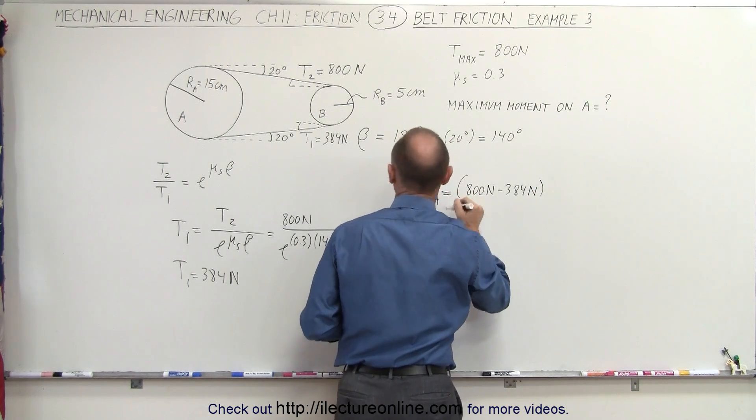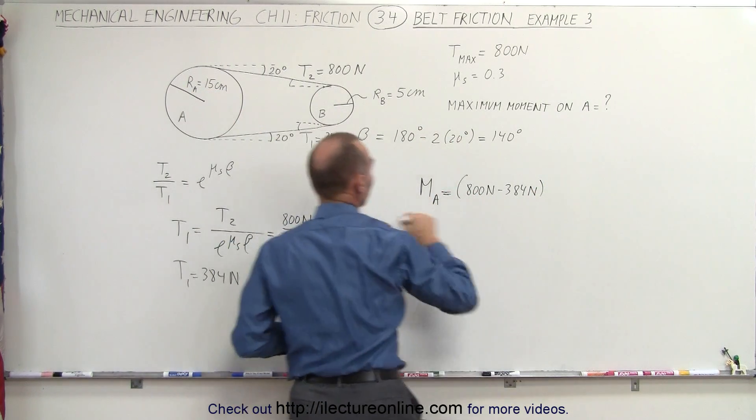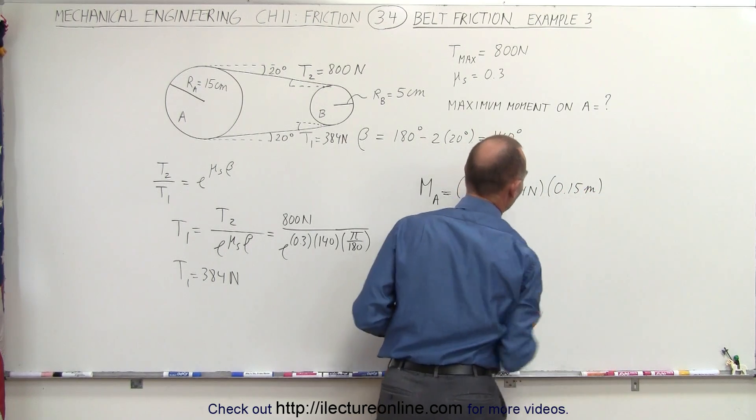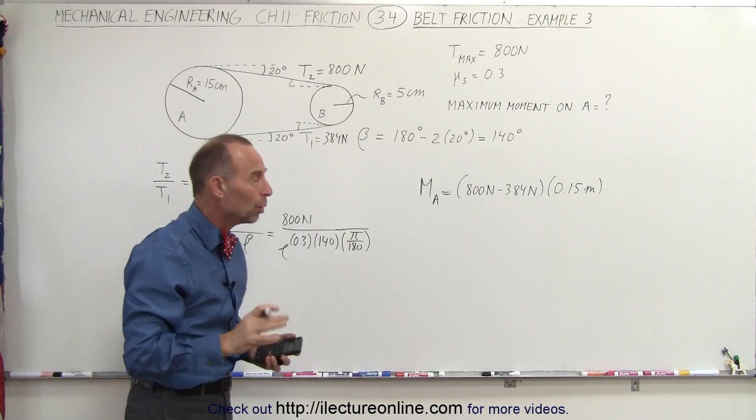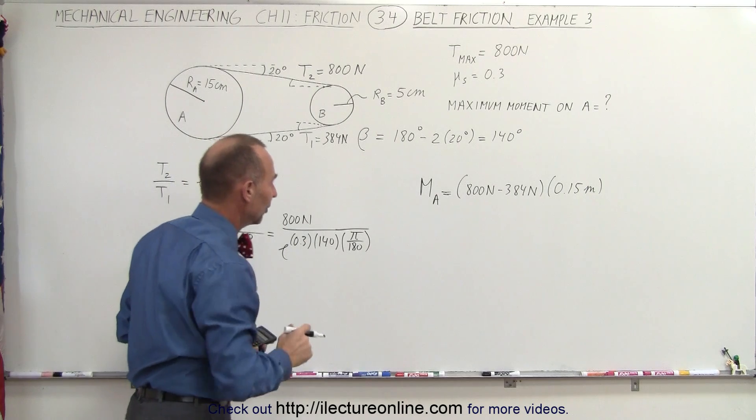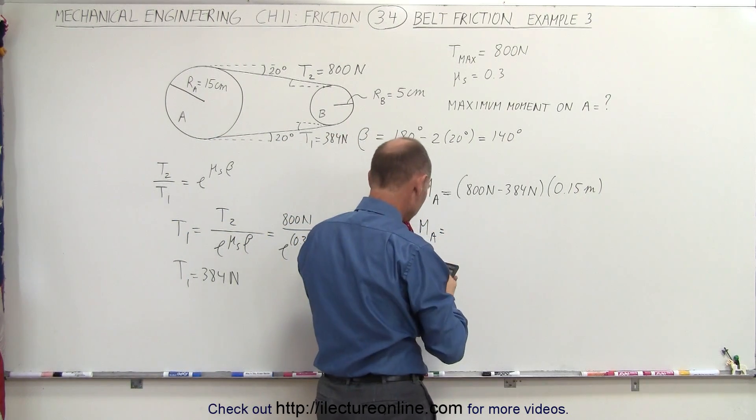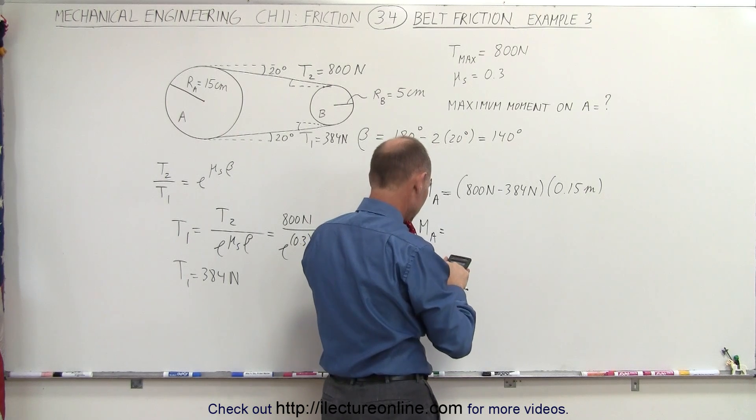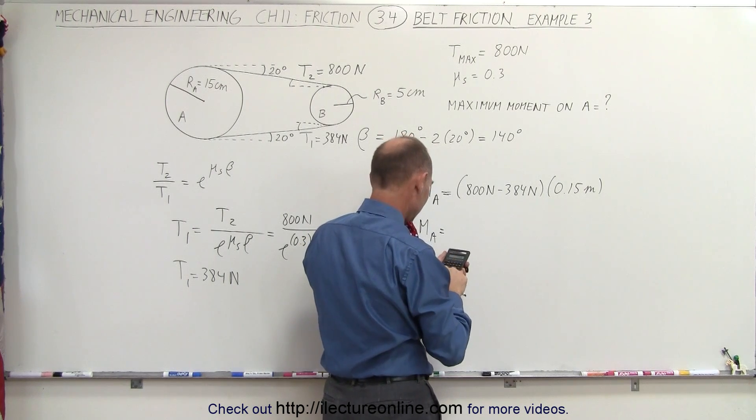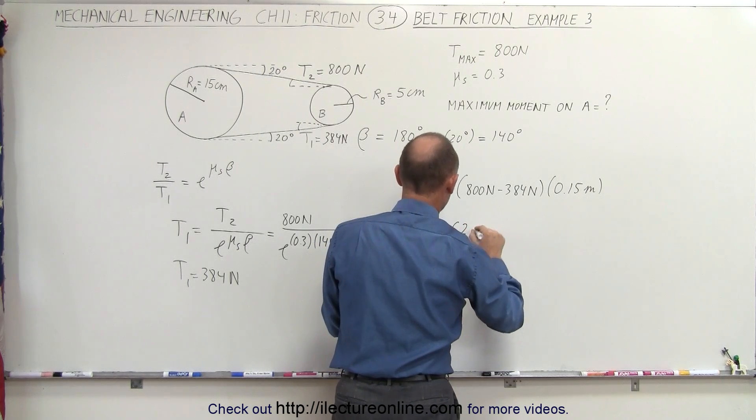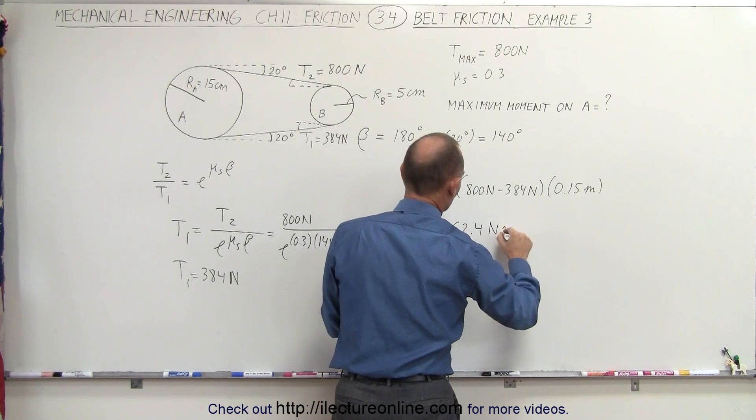Times the moment arm, or in this case the radius of the pulley, which is 15 centimeters, converted to meters, which is 0.15 meters. And that will be the moment, the maximum moment, we can apply to A. So the maximum moment on A is going to be equal to 800 minus 384 multiplied times 0.15, and that gives us 62.4 newton meters.